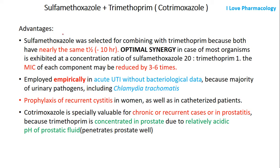Sulfamethoxazole was selected for combining with trimethoprim mainly because both drugs have nearly the same half-life of around 10 hours. They provide optimal synergistic activity against most organisms when administered in a concentration ratio of sulfamethoxazole 20 to trimethoprim 1. The minimum inhibitory concentration of each component may be reduced by 3 to 6 times when this concentration ratio is maintained.